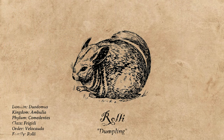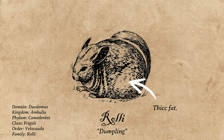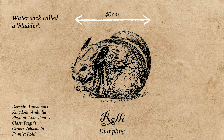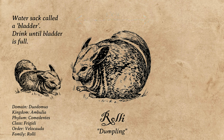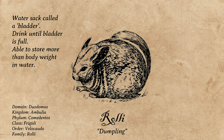On Locus, the rolli are rotund creatures whose bodies are comprised of a thick layer of fat surrounding a water sac called a bladder. They're relatively small creatures, and when parched resemble a shrew-like animal, though when they come across water they will drink until their bladder is full and swell to their iconic ball-like shape. In this way, rolli are able to store more than their entire body weight in water, which can last several months.